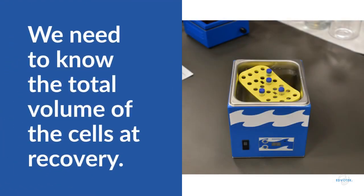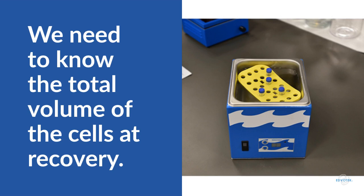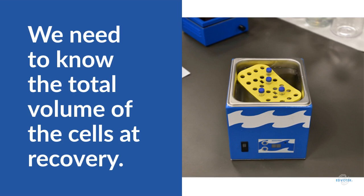Next, we need the final volume at recovery. This includes the volume of the competent cells and the recovery broth. So, if we had 100 microliters of competent cells, to which we added 250 microliters of recovery broth, our final volume at recovery would be 350 microliters, or 0.35 milliliters.